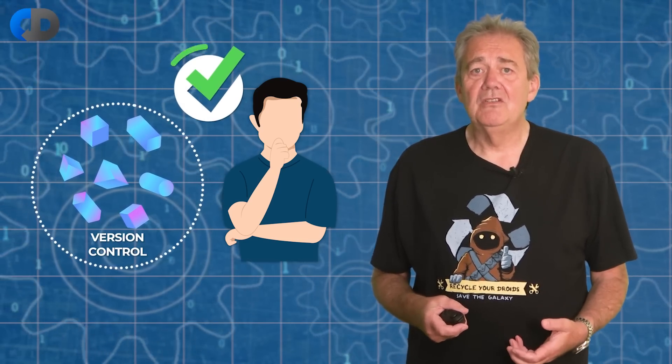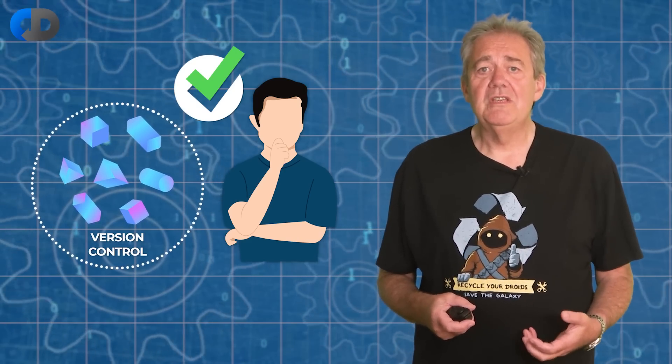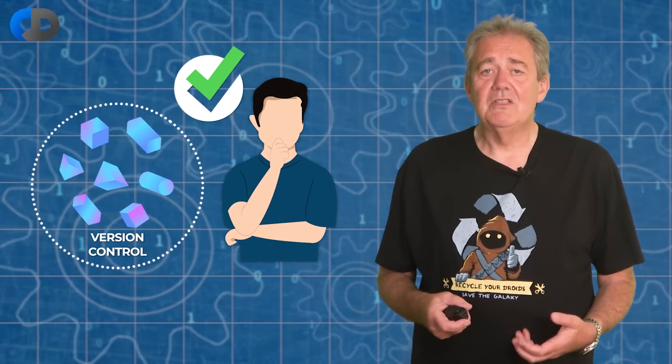Version control allows me to define what I mean when I want the answer to questions like, do all the pieces of my application work together? Without version control I can't tell what all of the pieces that allow my software to work or stop it from working really are.